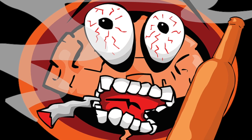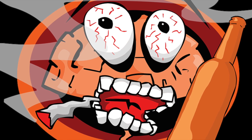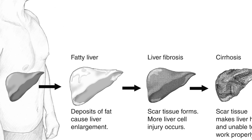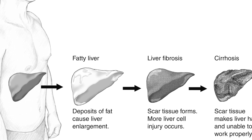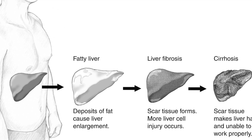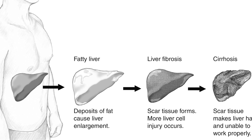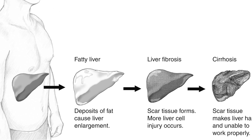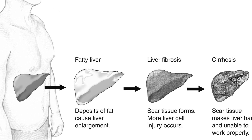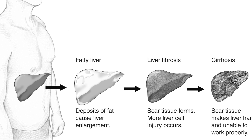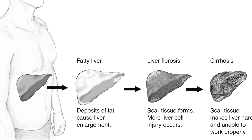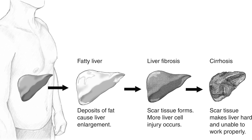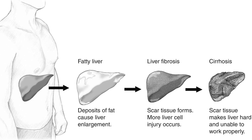Finally, alcoholics may develop cirrhosis of the liver, which destroys the liver tissue. Active liver cells are replaced with scar tissue which is unable to carry out vital functions. Those are just some of the dangers of alcohol and smoking.